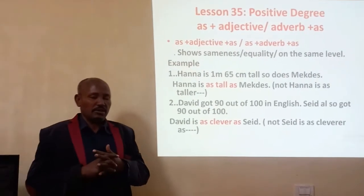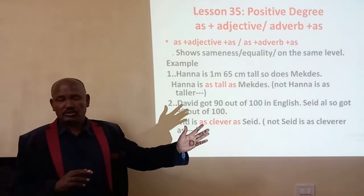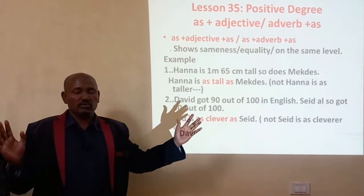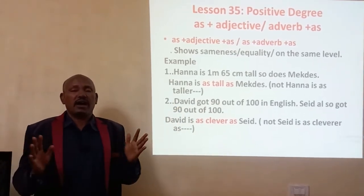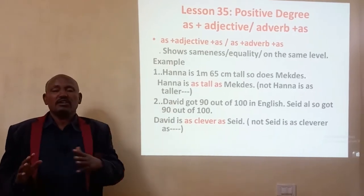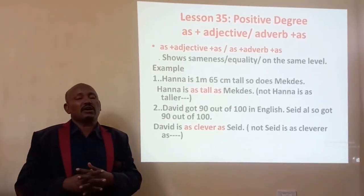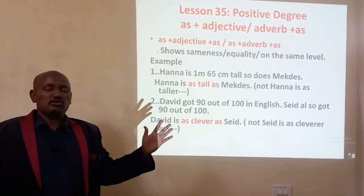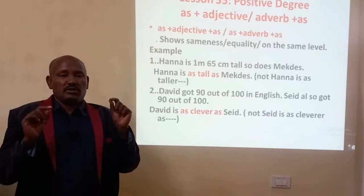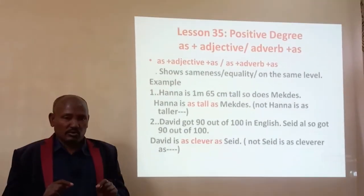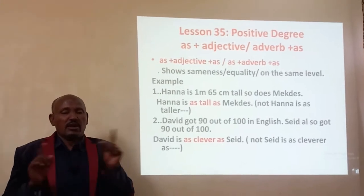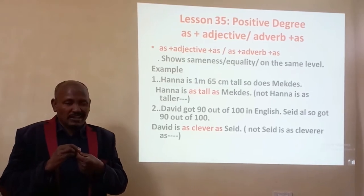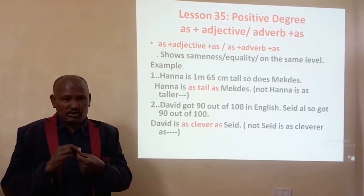Let me give you an example. Abbeba is one meter and 45 centimeters tall, and Thomas is one meter and 45 centimeters tall. Both these two students have the same height, so no one is taller than the other and no one is shorter than the other. So we say: Abbeba is as tall as Thomas, or Thomas is as tall as Abbeba. The form here is as plus adjective 'tall' plus as. This is an example of positive degree.